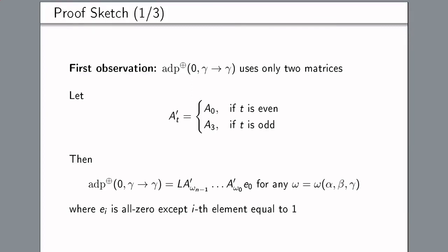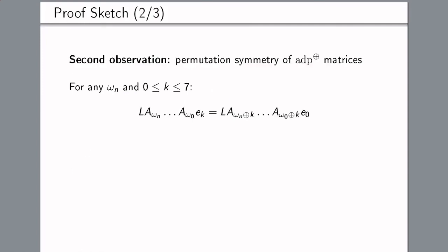A first observation is: if you want to compute adp_xor(0, gamma, gamma), then only two matrices are needed, because the matrices depend on the bits at a particular bit position, and in this case the difference at any position i is going to be either (0,0,0) or (0,1,1). So with just two matrices we have enough to compute the probability adp_xor(0, gamma, gamma).